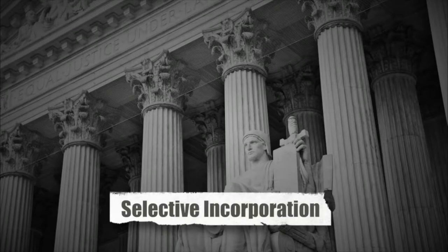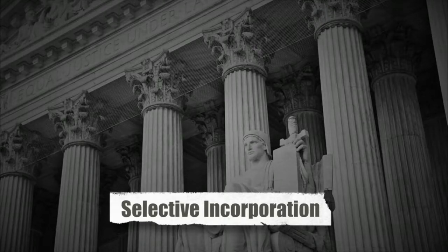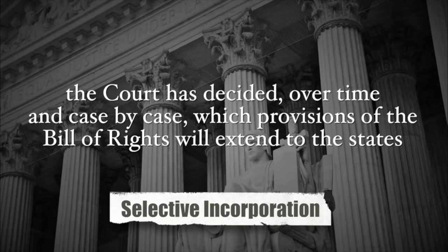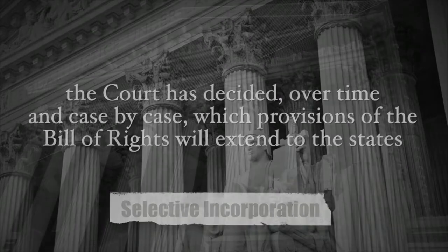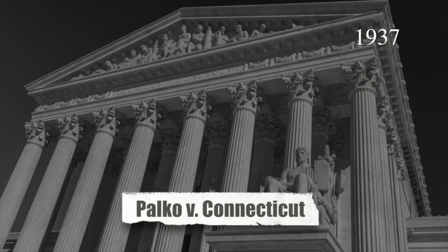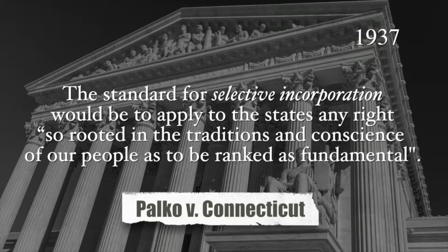But the Supreme Court rejected that view and instead adopted a policy known as Selective Incorporation, or the Incorporation Doctrine. Using Selective Incorporation, the court has decided over time and case by case which provisions of the Bill of Rights will extend to the states. In 1937, in the case Palko v. Connecticut, the Supreme Court set out the standard for selective incorporation. The standard, the court said, would be to apply to the states any right so rooted in the traditions and conscience of our people as to be ranked as fundamental.